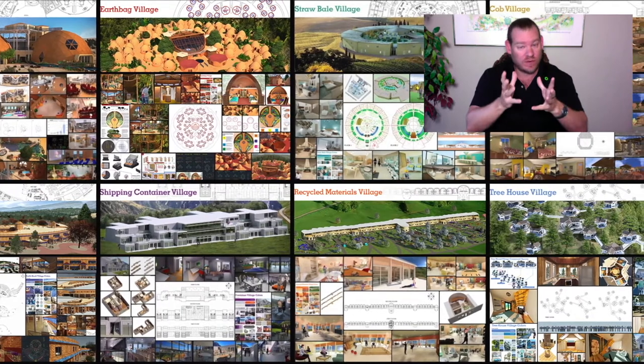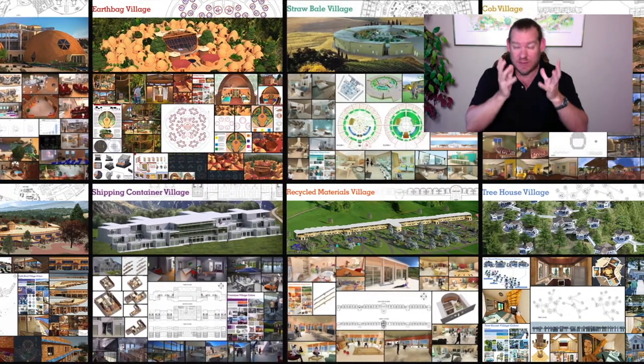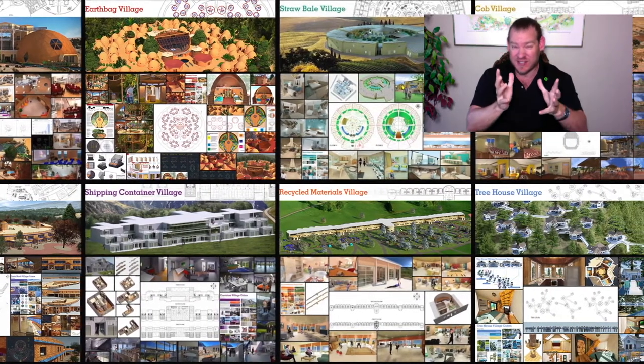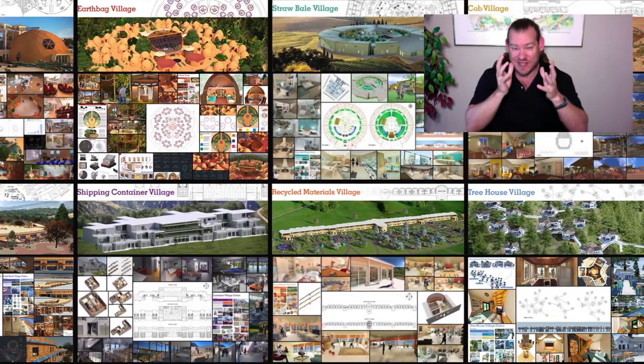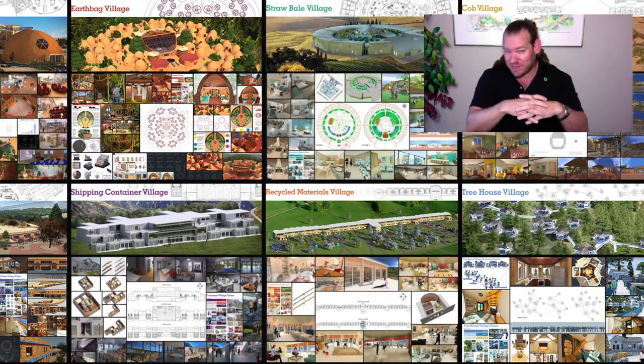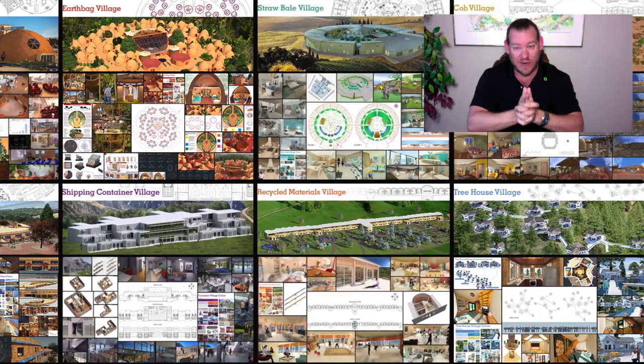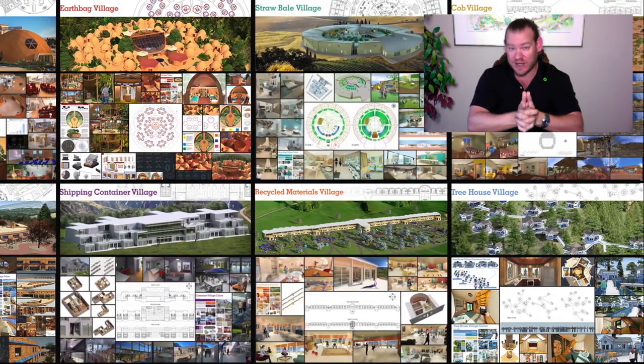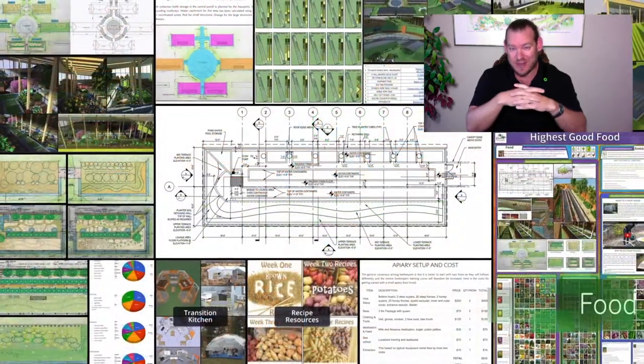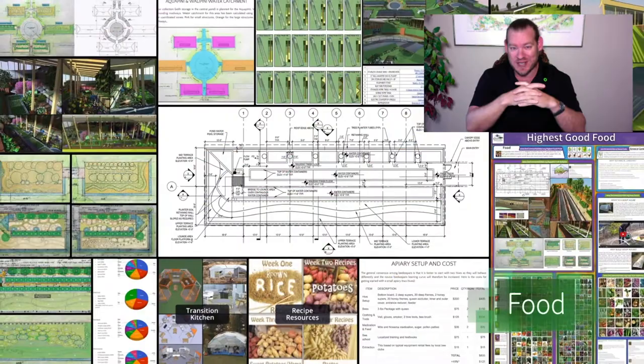One Community's goal, if you're not familiar with it, is to bring together people with the consciousness for the highest good of all life on this planet and to create sustainable and self-replicating teacher demonstration hubs as a pathway to global sustainability.